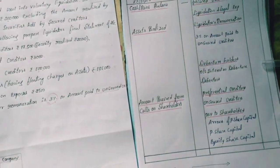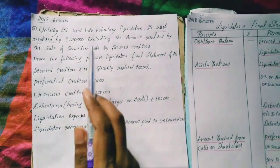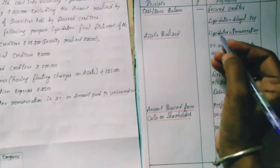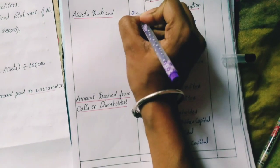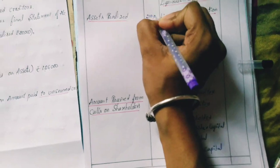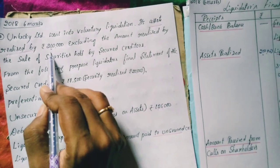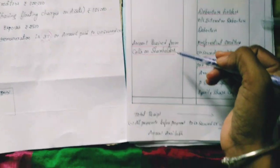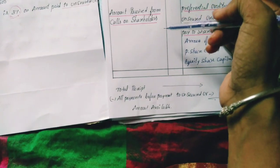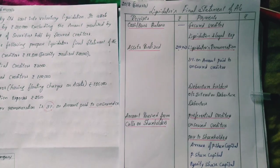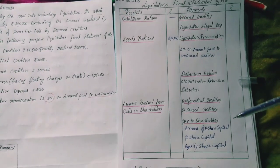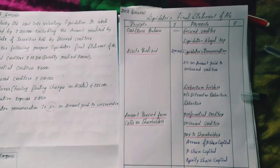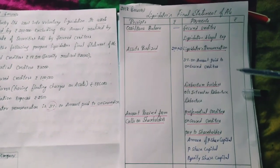Now moving to the second problem. There is no cash and bank balance given. Next, asset realized is to be checked. This is the format for the 6-mark and 14-mark compulsory questions. The format must be recorded carefully.